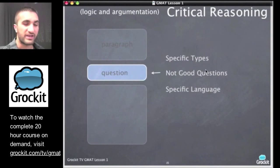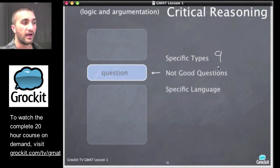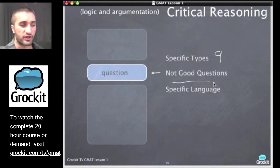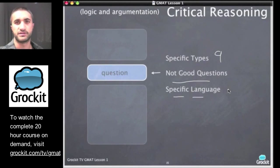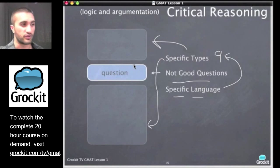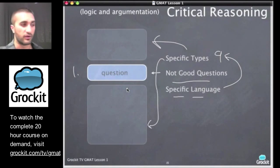There are specific types of critical reasoning questions on the GMAT — really only about nine different types. This is important because it's not an infinite variety; the same types appear over and over. There's almost always very specific language in the question that lets us identify the type. When we know the question type, we understand how to work the paragraph and the answer choices. Identifying the question starts a domino effect that affects how we work the whole question.